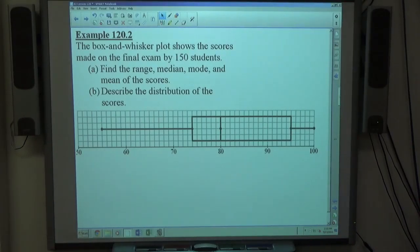Okay, example two. The box and whisker plot shows the scores made on the final exam by 150 students. Find the range, median, mode, and mean of the scores. Describe the distribution of the scores.